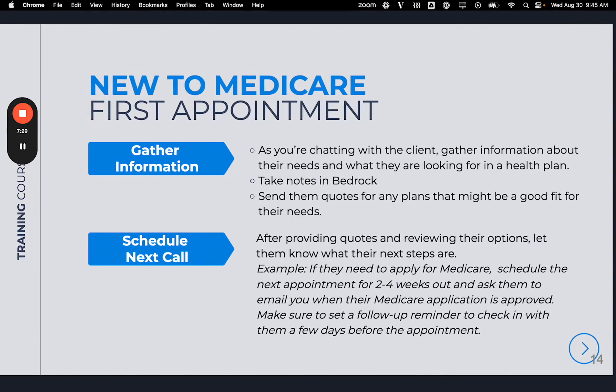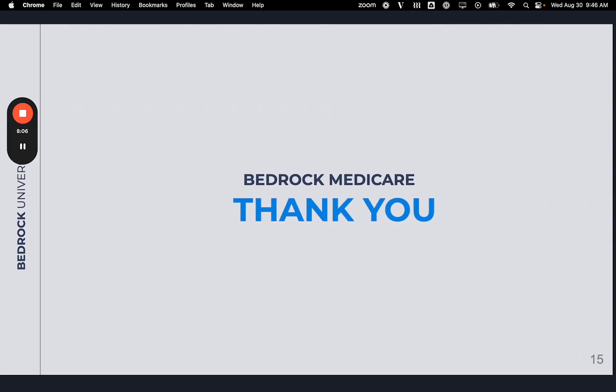Gathering Information: as you chat with the client, gather information about their needs and what they're looking for in a health plan. Take notes in Bedrock and send quotes for any plans that might be a good fit. Scheduling the Next Call: after providing quotes and reviewing options, let them know their next steps. For example, if they need to apply for Medicare, schedule the next appointment two to four weeks out and ask them to email you when their Medicare application is approved. Set a follow-up reminder to check in a few days before the appointment. That concludes our information on new to Medicare and switchers.